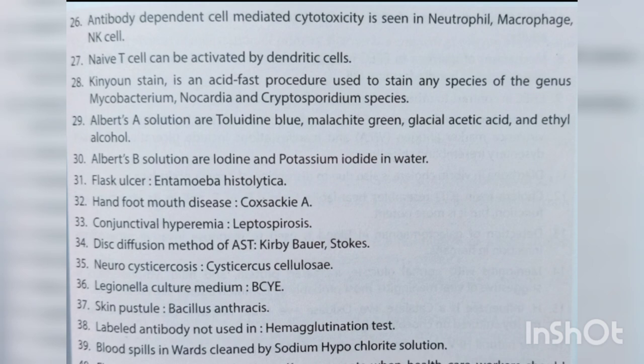Naive T-cells can be activated by dendritic cells. Kinyon stain is an acid-fast procedure used to stain any species of the genus Mycobacterium, Nocardia and Cryptosporidium species. Albert's A solution contains iodine and potassium iodide in water.